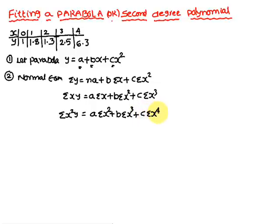To solve for a, b, and c we require these three equations. Comparing with the straight line case, there you only need a and b values, so there are only two normal equations. Here we have three normal equations. The third step is to prepare a table.